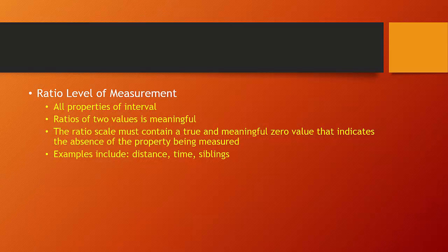At the ratio level of measurement, we have all of the properties of interval level data, and the ratio of the two values is meaningful. Variables such as time, height, distance, for example, use the ratio scale. What separates the ratio scale from an interval scale is ratio has a zero value that is meaningful and indicates an absence of the property that we're trying to measure.